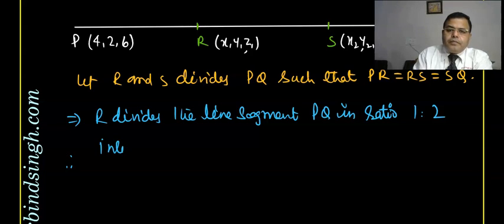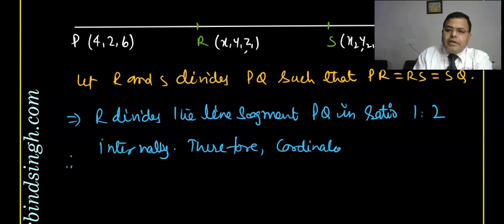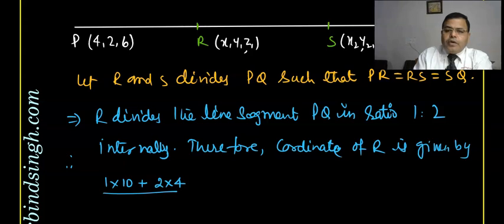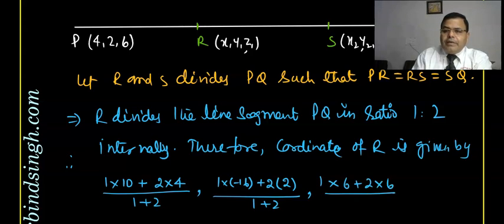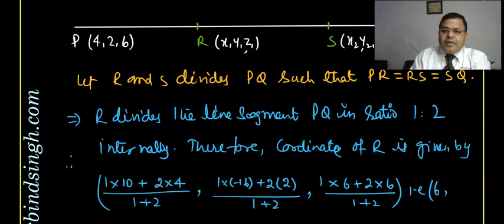Coordinate of R using ratio 1:2: x = (1×10 + 2×4) / 3 = 18/3 = 6. y = (1×(-16) + 2×2) / 3 = (-16 + 4) / 3 = -12/3 = -4. z = (1×6 + 2×6) / 3 = 18/3 = 6. So coordinate of R is (6, -4, 6).